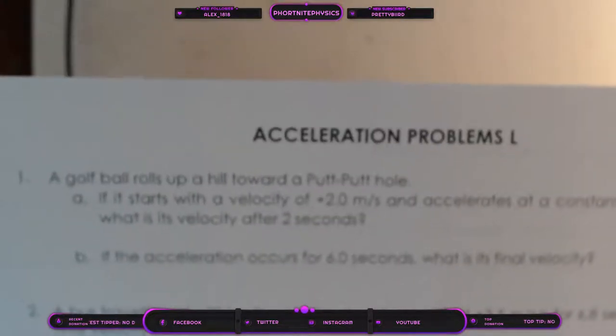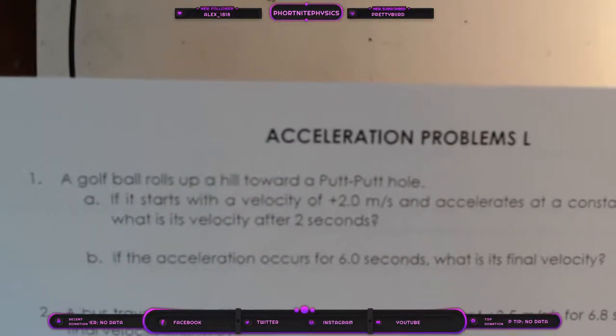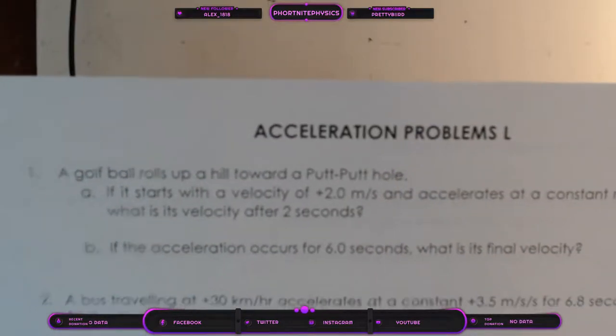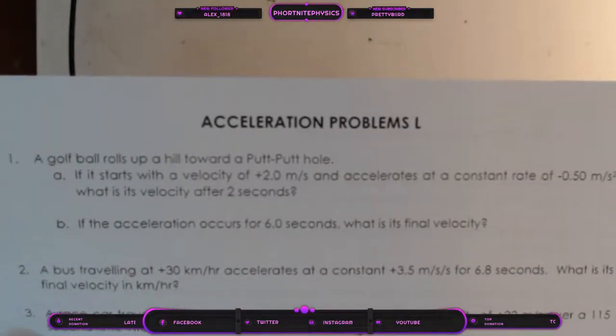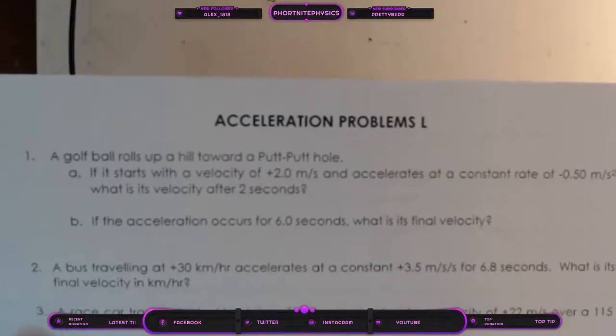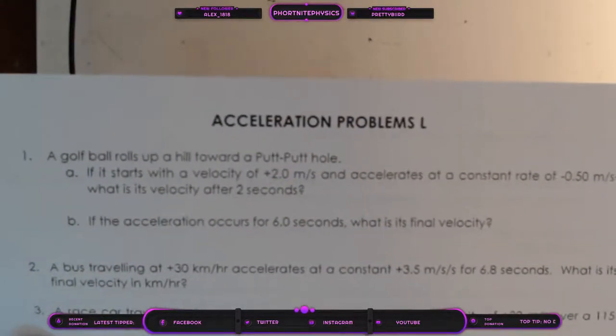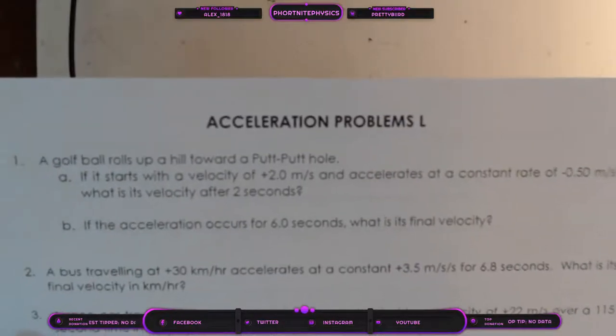A golf ball rolls up a hill towards a putt-putt hole. If it starts with a velocity of 2 meters per second and accelerates at a constant rate of negative 0.5 meters per second per second, what is its velocity after 2 seconds? If the acceleration occurs for 6 seconds, what is its final velocity?